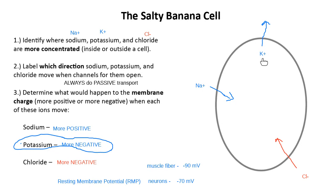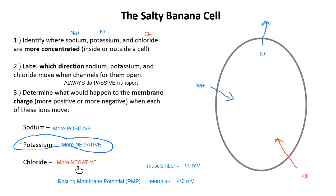Where we're going by the end of class is talking about how when a neuron gets a message that opens a chemically-gated sodium channel, sodium comes inside and makes the membrane charge more positive — that gets the neuron excited and ready to talk to its neighbor. But if a message opens a chloride channel, chloride makes the membrane charge more negative, so the neuron is less likely to talk to its neighbors.